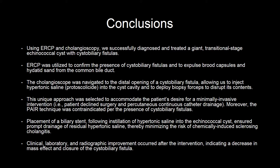Using ERCP and cholangioscopy, we successfully diagnosed and treated a giant transitional stage echinococcal cyst with cystobiliary fistulas. ERCP was utilized to confirm the presence of cystobiliary fistulas and to expose brood capsules and hydatid sand from the common bile duct. The cholangioscope was navigated to the distal opening of a cystobiliary fistula, allowing injection of hypertonic saline into the cyst cavity and deployment of biopsy forceps to disrupt its contents. This unique approach was selected to accommodate the patient's desire for a minimally invasive intervention; moreover, the PAIR technique was contraindicated per the presence of cystobiliary fistulas. Placement of a biliary stent following installation of hypertonic saline ensured prompt drainage of residual hypertonic saline, thereby minimizing the risk of chemically induced sclerosing cholangitis. Clinical, laboratory, and radiographic improvement occurred after the intervention, indicating a decrease in mass effect and closure of the cystobiliary fistula.